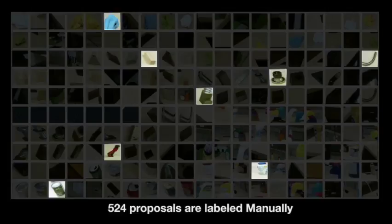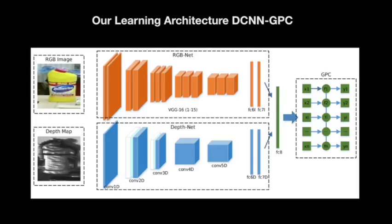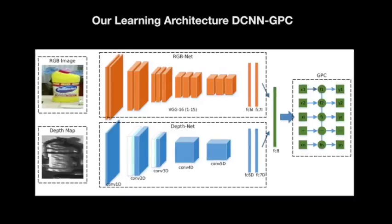Then we labeled very few examples manually. Our proposed DCNN-GPC can be trained by small-scale labeled data and propagate the labels to large-scale unlabeled data.